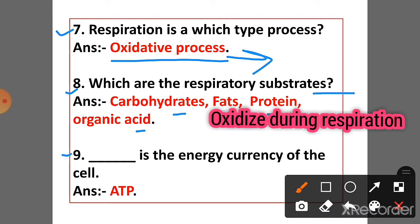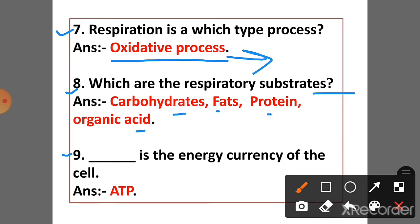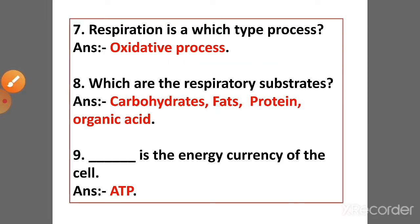Question 9: What is the energy currency of the cell? Answer: ATP is the energy currency of the cell.